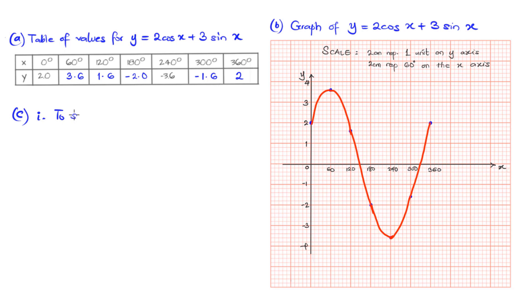On the third question, we are asked to solve the equation from the graph. We are to use the graph to solve the equation 2cos(x) + 3sin(x) = -1. If we take this equation and compare with the equation we've been working with, that is 2cos(x) + 3sin(x) = y, we can see that the left-hand side are equal. That means the right-hand side are also equal. So y = -1.